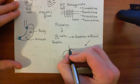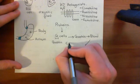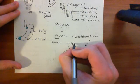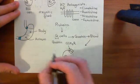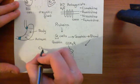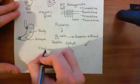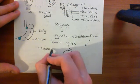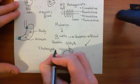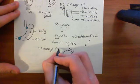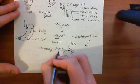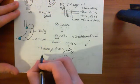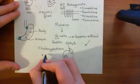So this box represents our cholecystokinin-2 receptor — our CCK-2 receptor. CCK is short for cholecystokinin: the first C is 'chole', the second C is 'cyst', and the K is 'kinin'. So CCK is short for cholecystokinin, and this is the cholecystokinin-2 receptor.